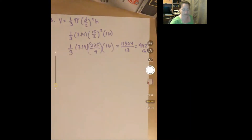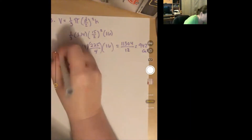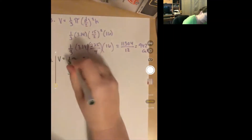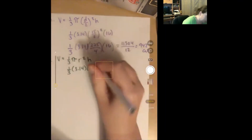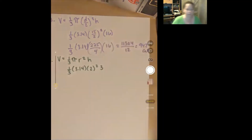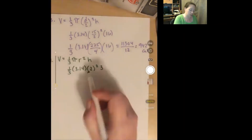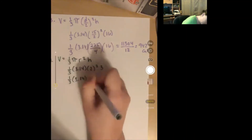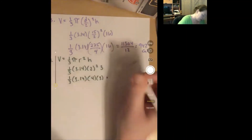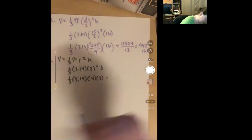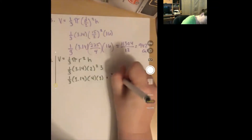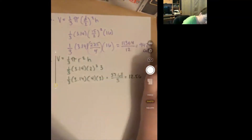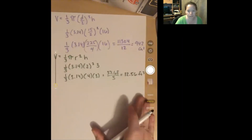Number four: volume equals one-third pi r squared h, and this time we are given the radius. One-third stays the same, pi becomes 3.14, r becomes 2 squared, and h becomes 3. Squaring 2 means 2 times 2, so we have one-third times 3.14 times 4 times 3. That gives 37.68 divided by 3, which equals 12.56 feet cubed. Volume is always cubed — that's how we know it's a volume.